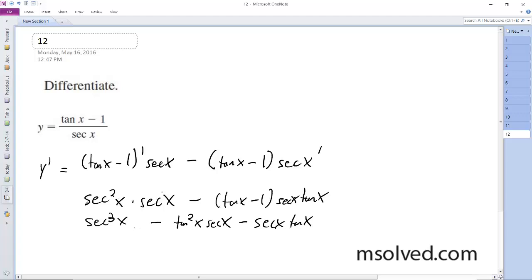So a secant can be factored out of all of these. So what we end up with is secant x.